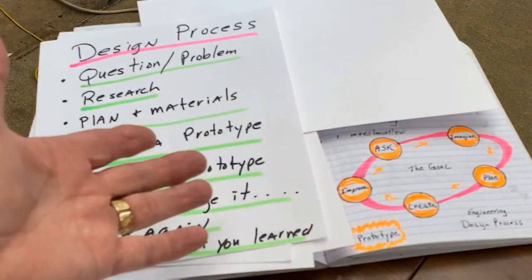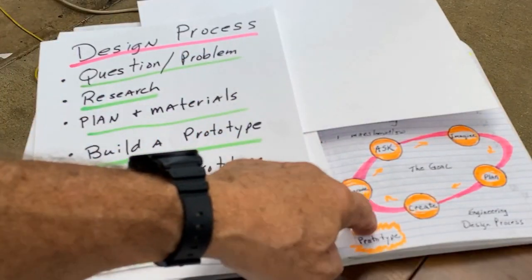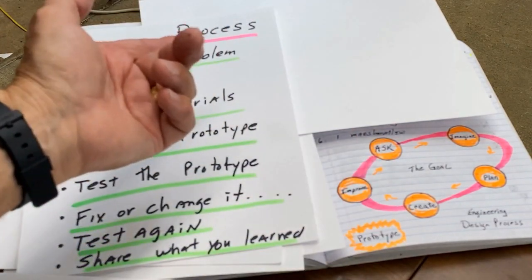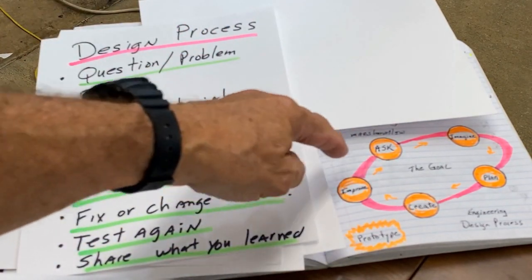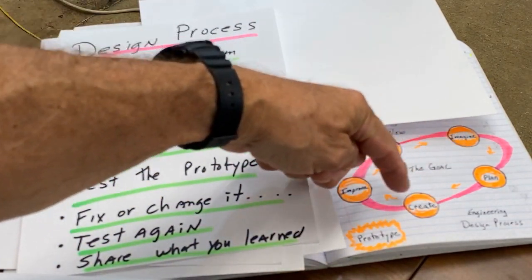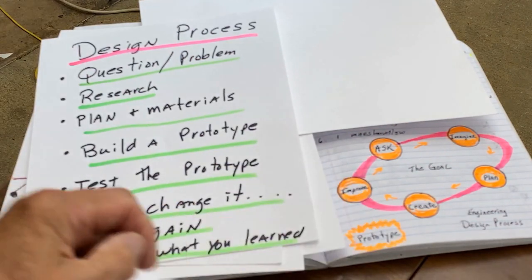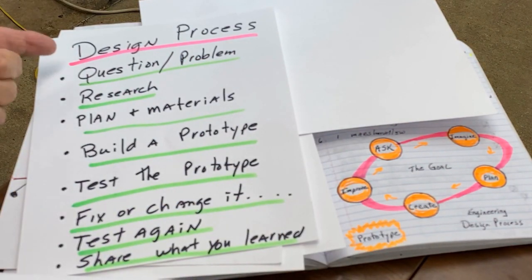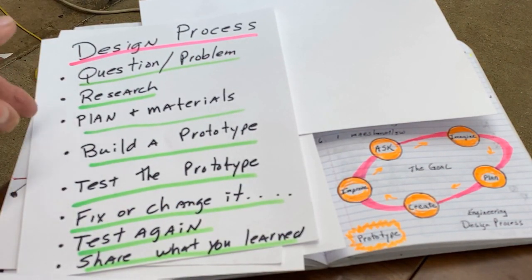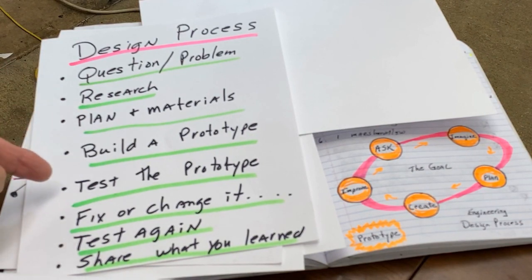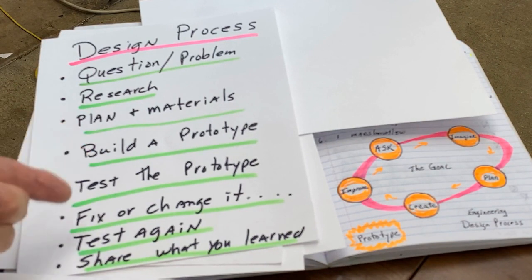Here are two graphic examples of the design process. The first: ask, imagine, plan, create, improve for your prototype. Here's another one I like: have a question, do the research, plan your materials, build a prototype, test the prototype, fix or change it, test it again, and share what you learned.